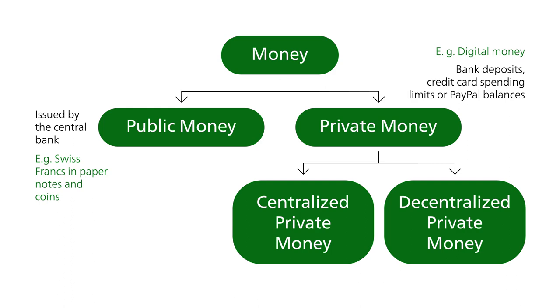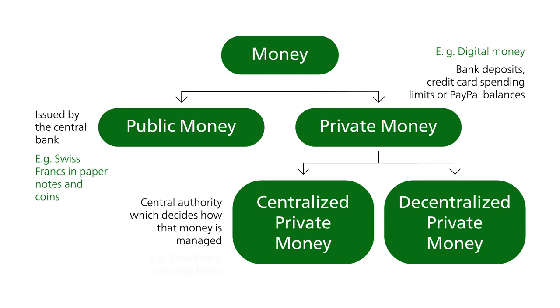Centralized private money is characterized by a central authority which decides how that money is managed. An example of centralized private money are credit card spending limits.